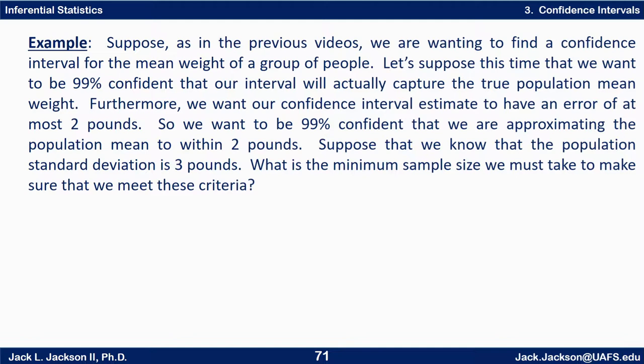For example, suppose as in the previous videos we're wanting to find a confidence interval for the mean weight of a group of people. Let's suppose this time that we want to be 99 percent confident that our interval will actually capture the true population mean weight. Furthermore, we want our confidence interval estimate to have an error of at most two pounds. So we want to be 99 percent confident that we are approximating the population mean to within two pounds. Suppose that we know that the population standard deviation is three pounds. What is the minimum sample size we must take to make sure that we meet these criteria?